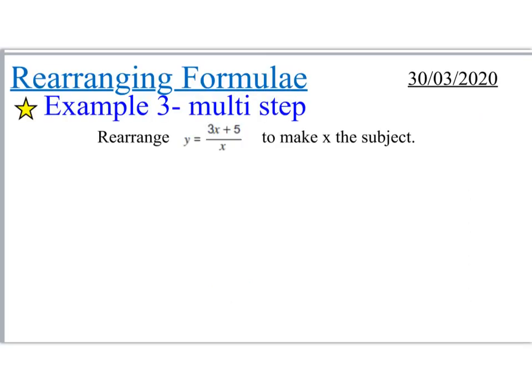This last example is really going to start to get complicated now. There's multiple things happening in this particular question. And if you're not so happy with it, don't worry about it. It's fine. We will get there eventually. Just have a go at it. And if it doesn't work out today, try it again tomorrow. And then maybe the next day. So this time it says, rearrange y is equal to 3x plus 5 divided by x to make x the subject. Now the main problem in this question is that there's an x here, and there's also an x here. Two x's! We haven't had two x's in any of the questions yet.